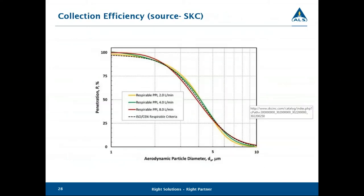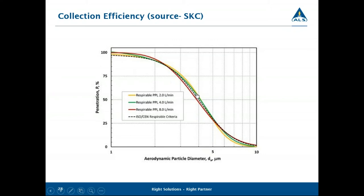Regardless of which unit you use, they all need to generate the same collection profile. When someone talks about a 50% cut point, they mean that if these units are properly deployed, about 50% of 4-micrometer diameter particulate will make it onto the filter, while collection efficiency increases sharply for smaller particles. It's important to use the recommended flow rates for each particular unit — adjusting flow rates shifts the collection curve and affects collection dynamics.